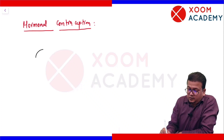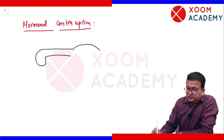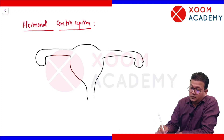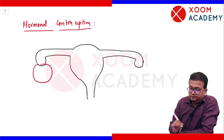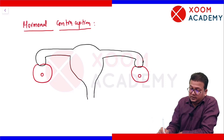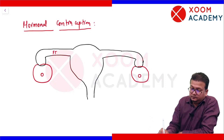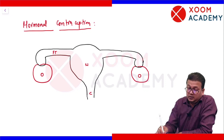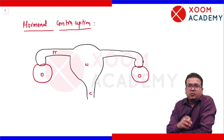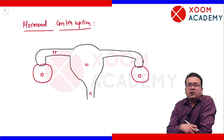To understand that, we will draw a very simple diagram of the female genital system. So we have the ovaries — this is just a representative diagram. Then you have the fallopian tube, the uterine cavity, and the cervix.